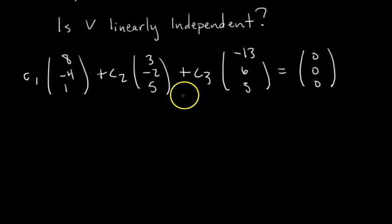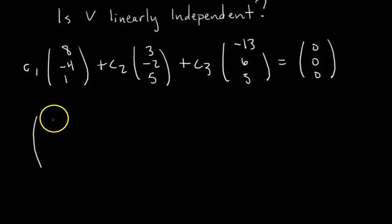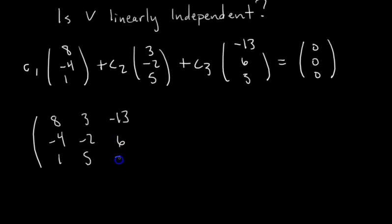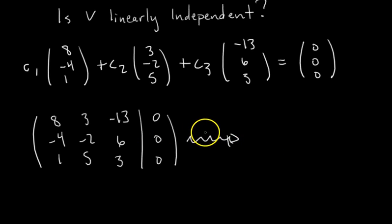To find the solutions C1 through C3, we rewrite it as an augmented matrix: 8, negative 4, 1 / 3, negative 2, 5 / negative 13, 6, 3, with the augmented column all zeros. We row reduce all the way down to reduced row echelon form and see if we have a free variable.